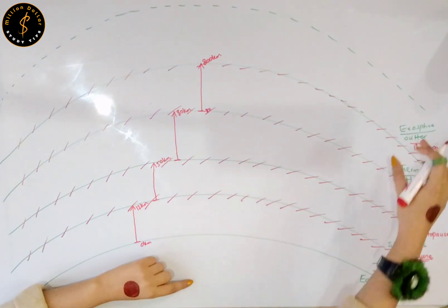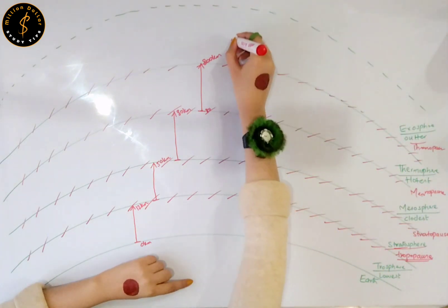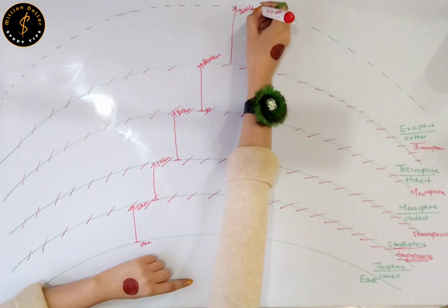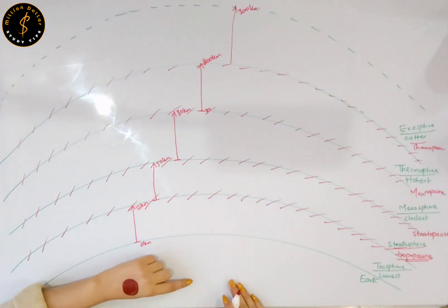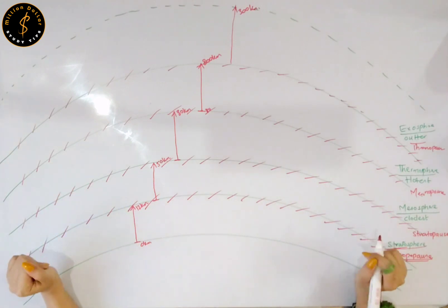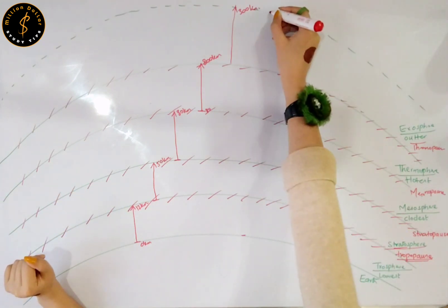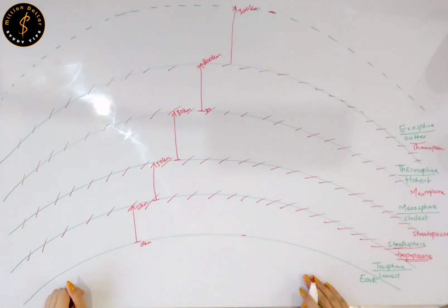And your exosphere — your total atmosphere starts from the surface of your planet Earth, so your total atmosphere goes from 0 kilometers up to 3,000 kilometers.